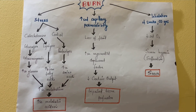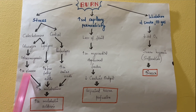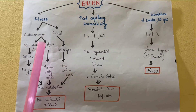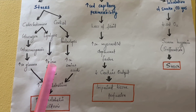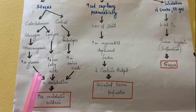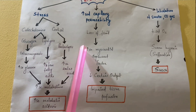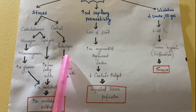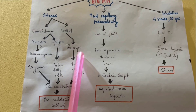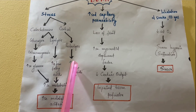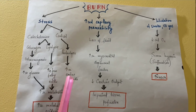Glucagon causes an increase in glucose levels. Lipolysis is the breakage of lipids, producing free fatty acids. Similarly, proteolysis is the breakage of proteins, releasing amino acids into the body. So in the stress response, we see elevated glucose, free fatty acids, and amino acids being released.